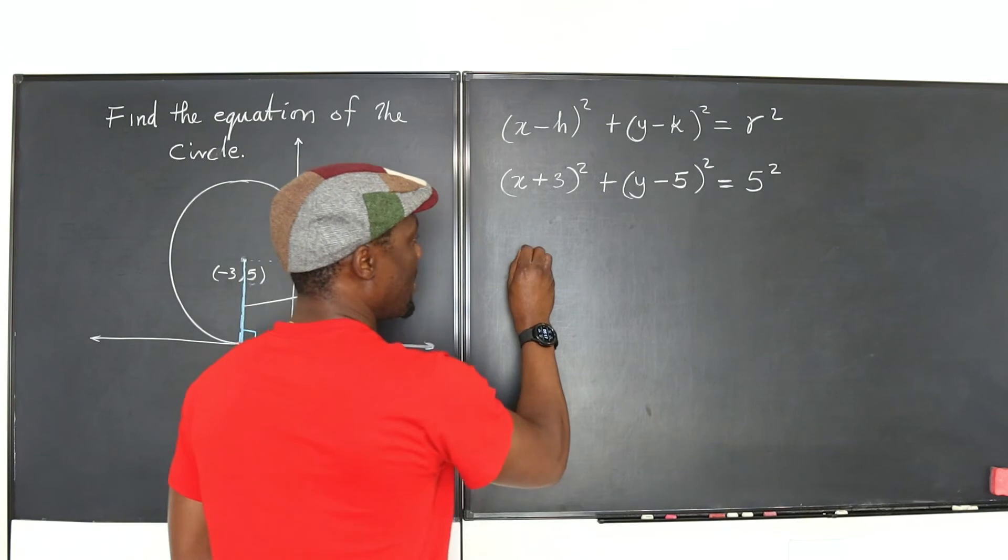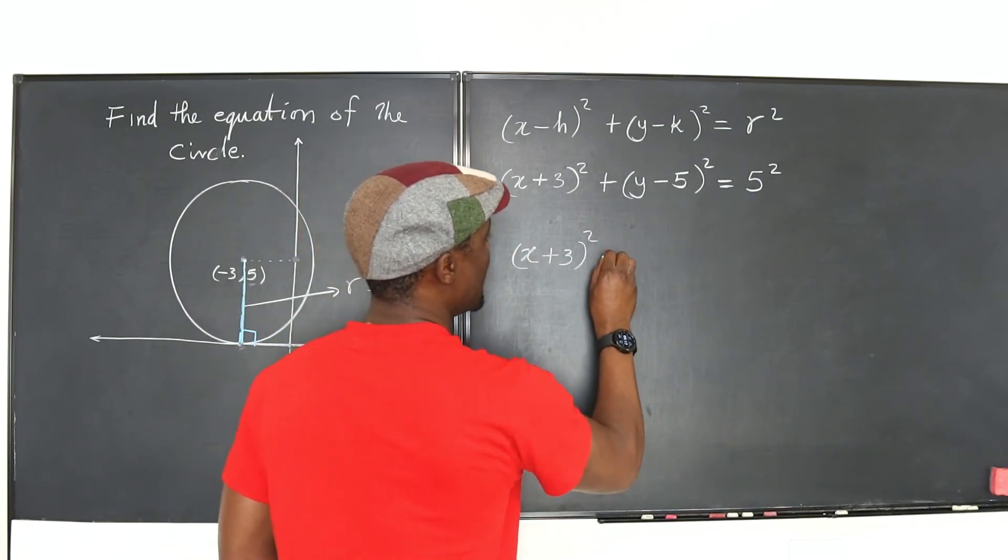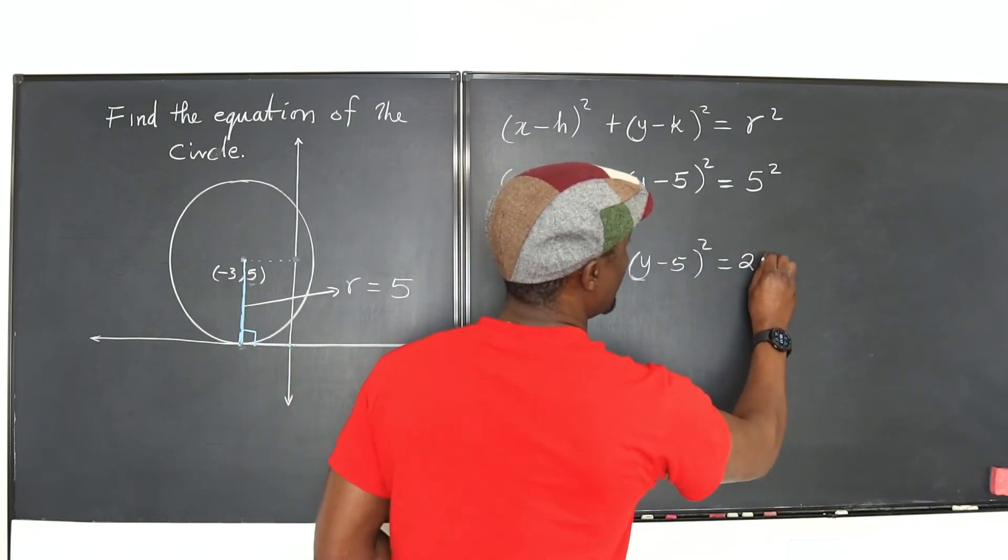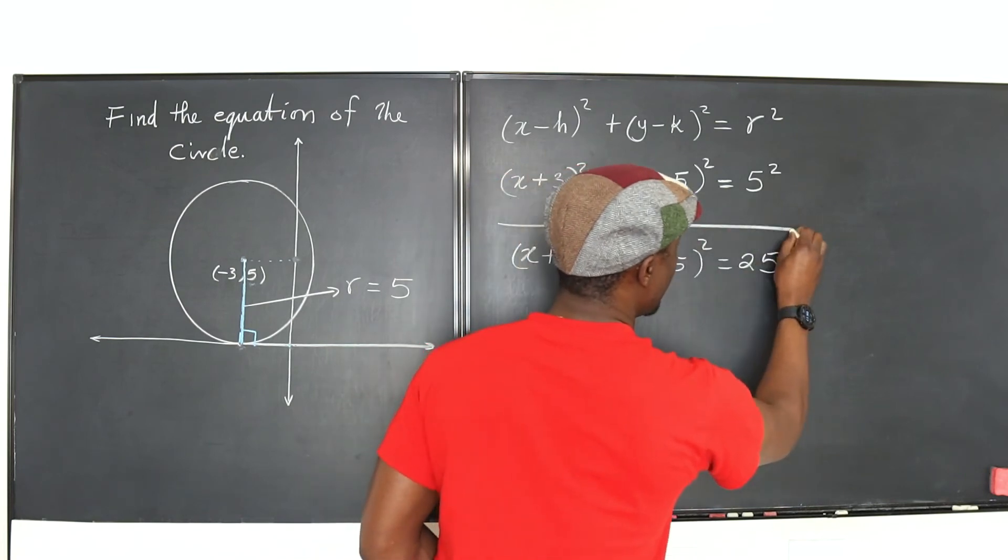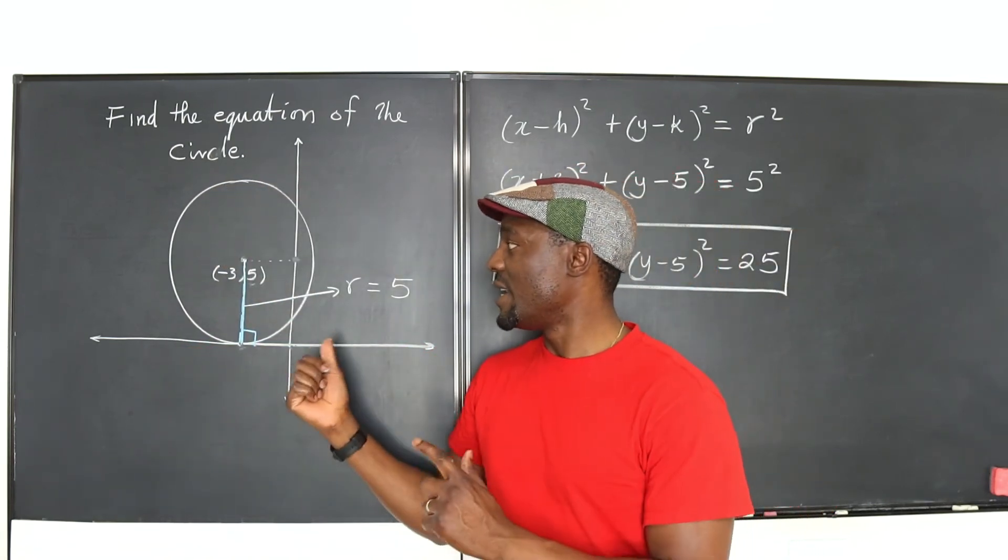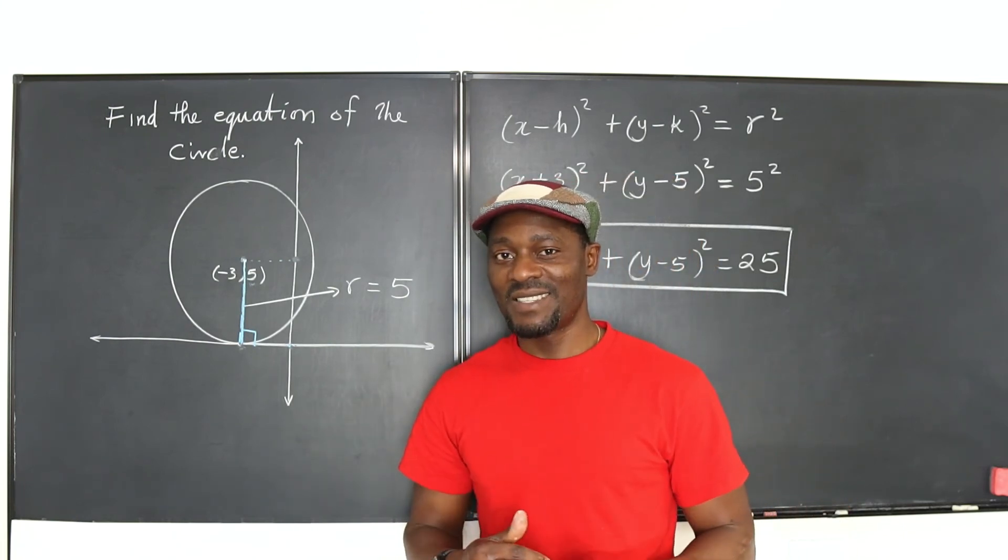So, our circle is x plus 3 squared plus y minus 5 squared equals 25. That is the equation of the circle centered at negative 3, 5 tangent to the x-axis.